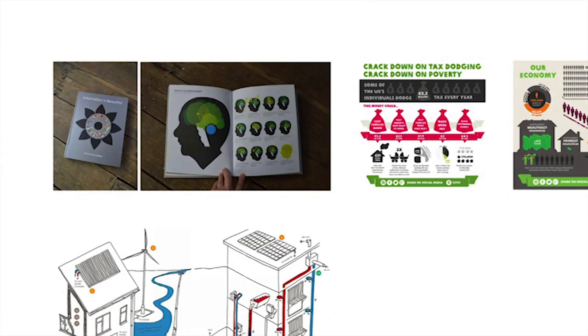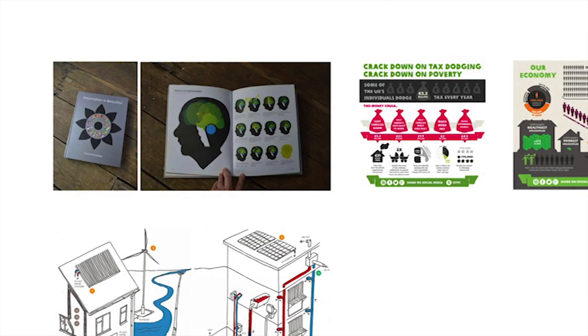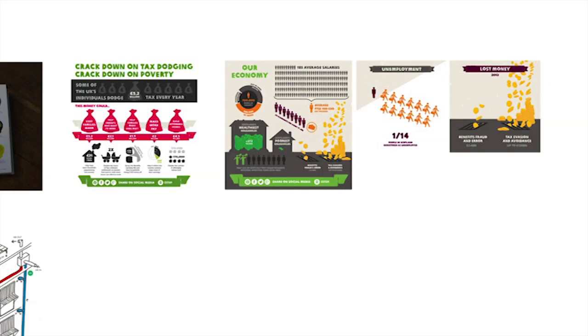To give you a few examples infographics-wise: the first is the Information is Beautiful book — those of you into infographics might be familiar with it. I helped out, along with some other designers, to do a few spreads. This particular spread is about consciousness and is a visualisation of different thinkings about how consciousness works. More recently I've been doing work for Oxfam — one about tax evasion and another about the Scottish economy.